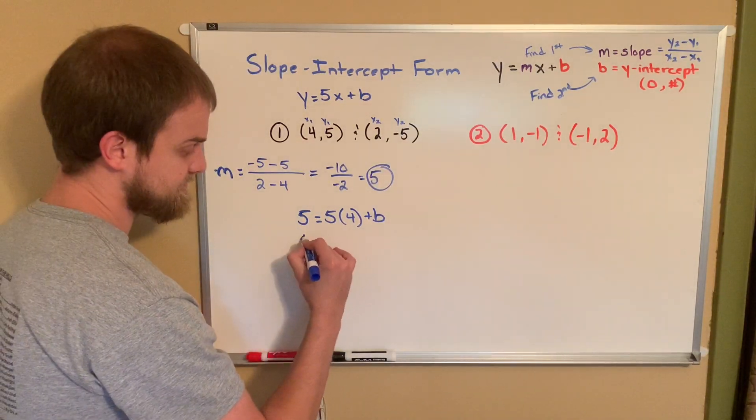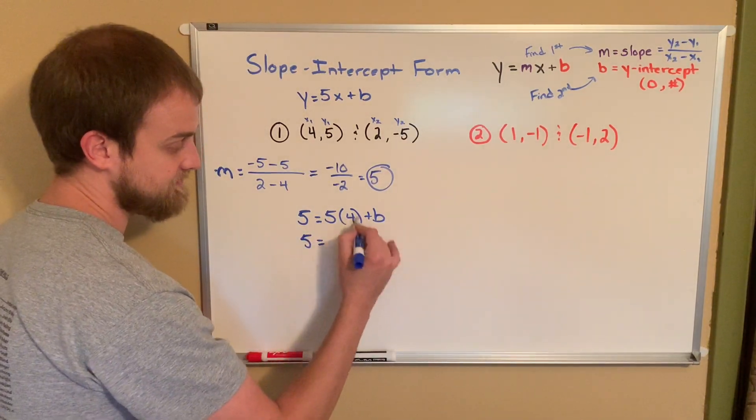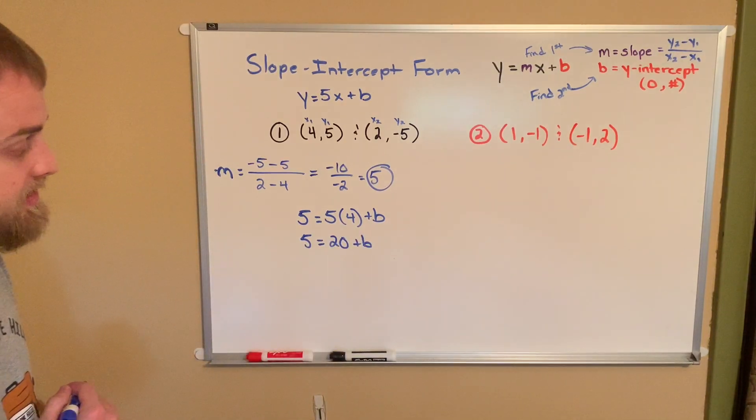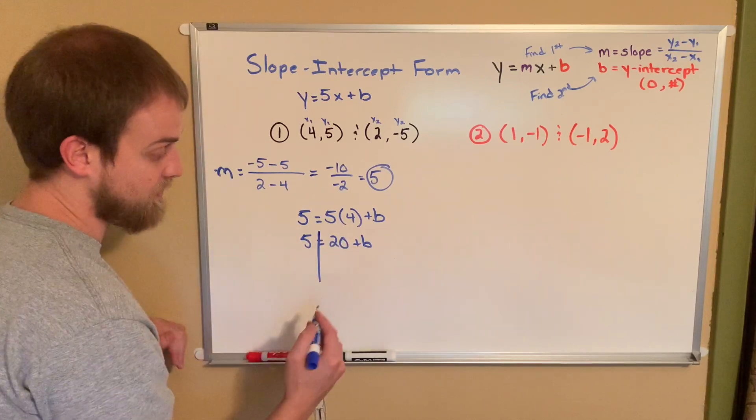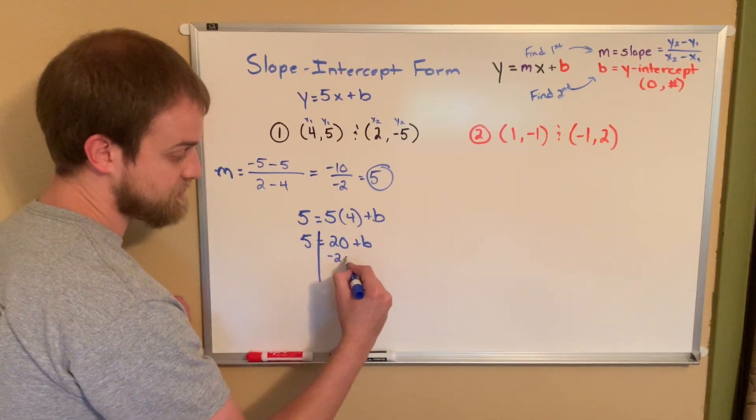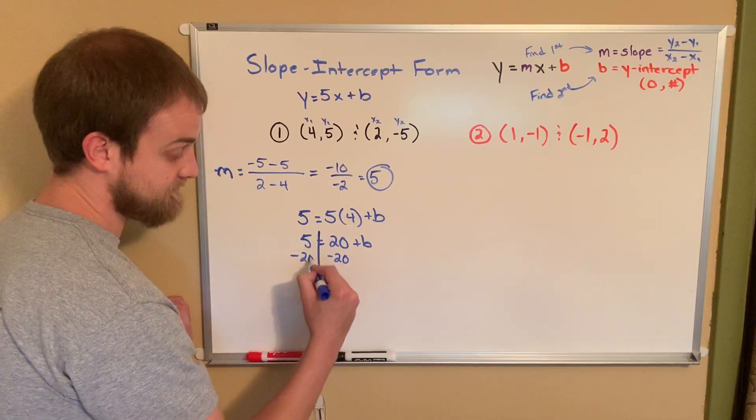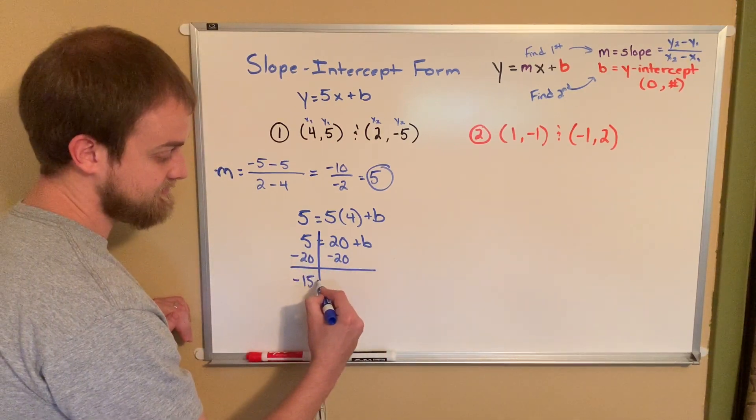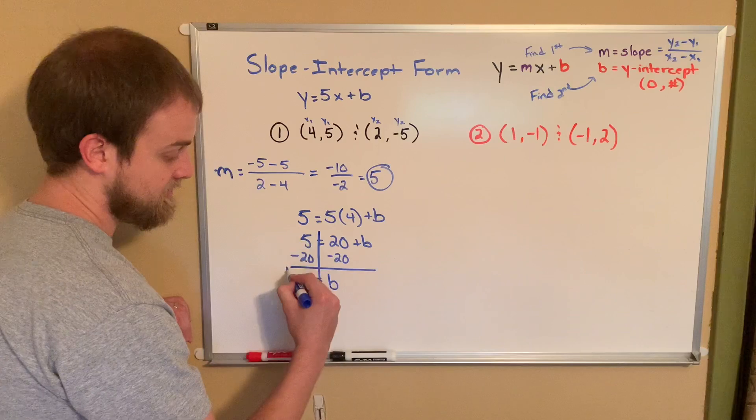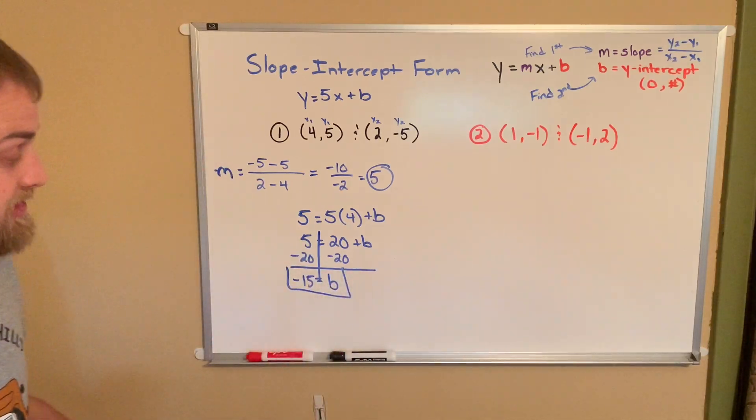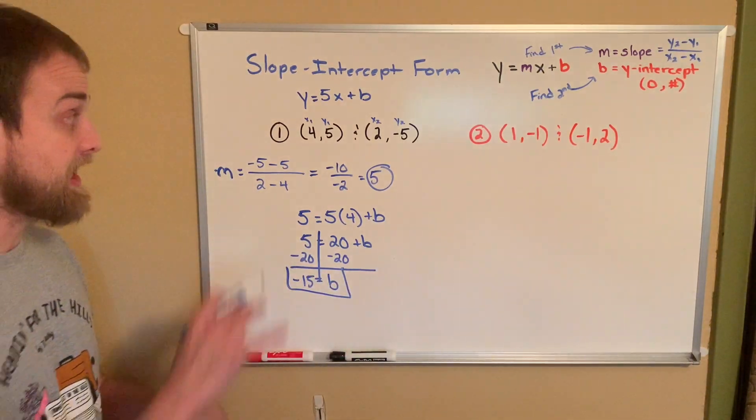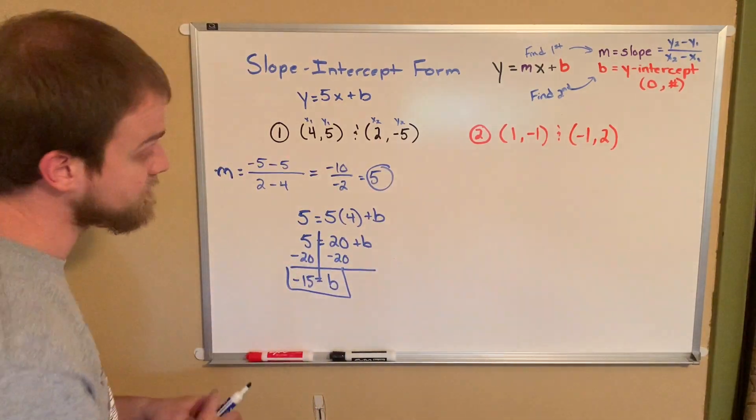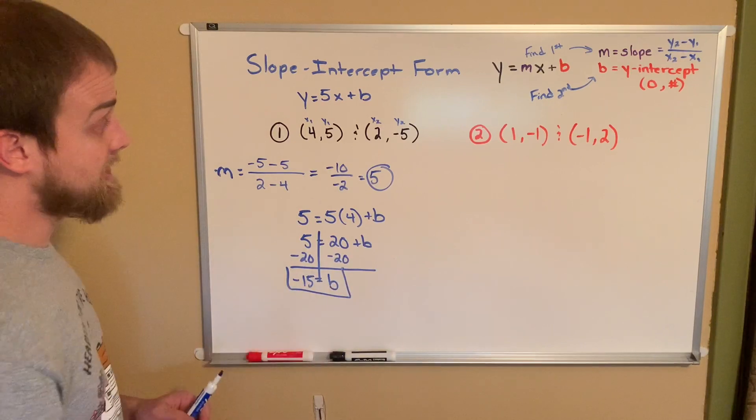Now I'm ready to find my b. Let's simplify a little bit. 5 equals 5 times 4 is 20 plus b. Now we take our one-step equation here and we solve. I do minus 20 both sides because I see positive 20. 5 minus 20 is negative 15. That equals b. So my y-intercept is actually negative 15.